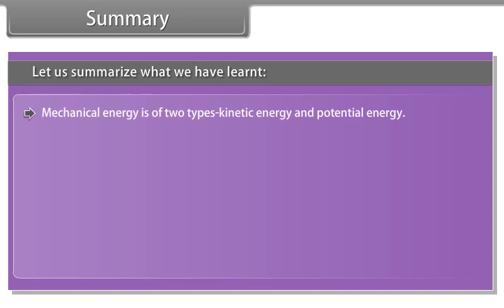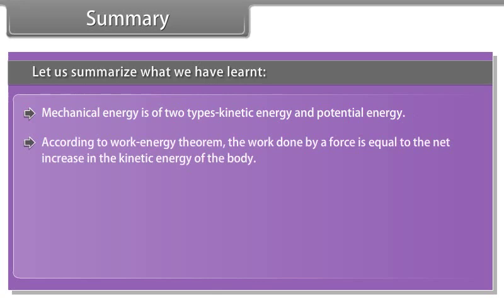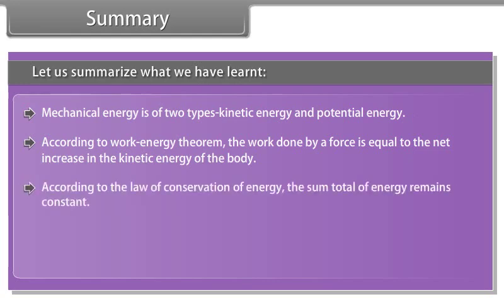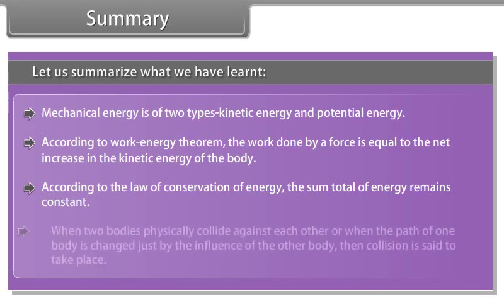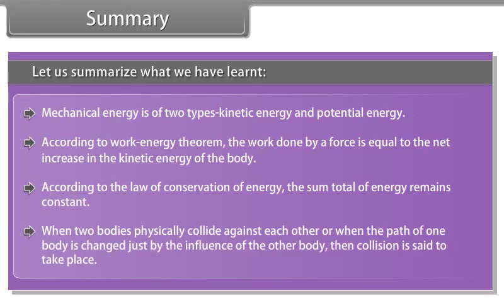Energy of a body is the capacity or ability of a body to do work. Mechanical energy is of two types: kinetic energy and potential energy. According to work energy theorem, the work done by a force is equal to the net increase in the kinetic energy of the body. According to the law of conservation of energy, the sum total of energy remains constant. When two bodies physically collide against each other or when the path of one body is changed just by the influence of the other body, then collision is set to take place.